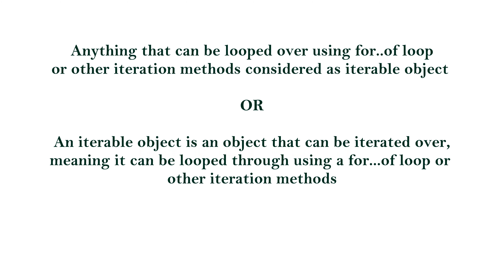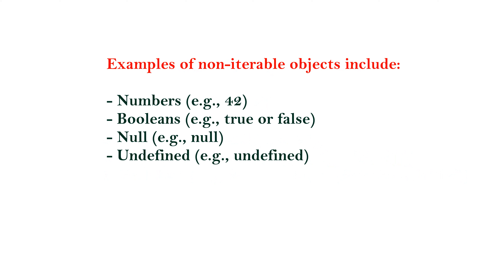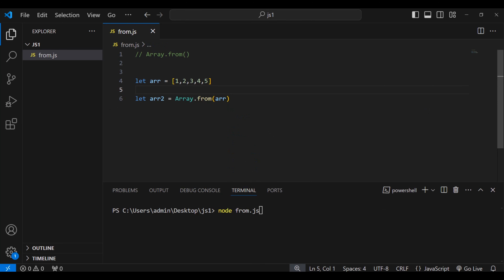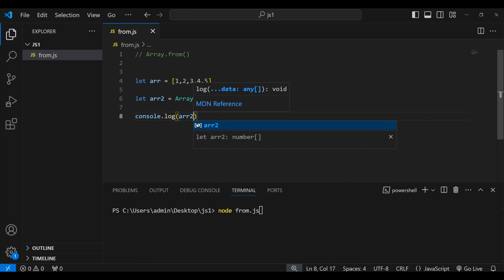Examples of iterable objects are arrays, strings, sets, maps, etc. Examples of non-iterable objects are numbers, booleans, null, and undefined — because, for example, you cannot iterate over the number 42. So let's pass our array into Array.from and print it using console.log of array2. You can see it already came up here.